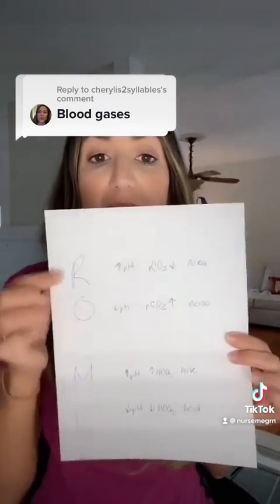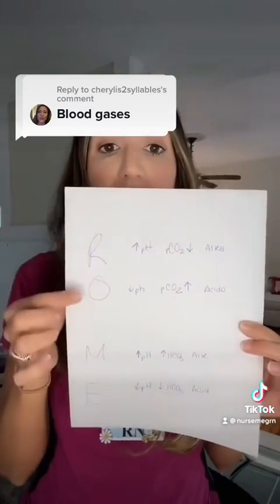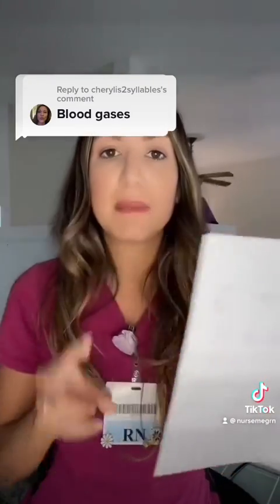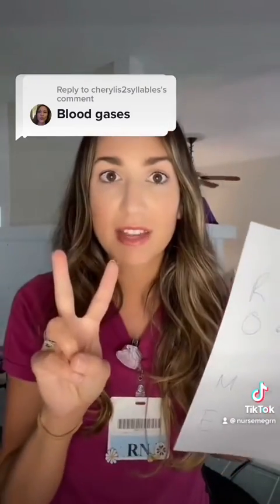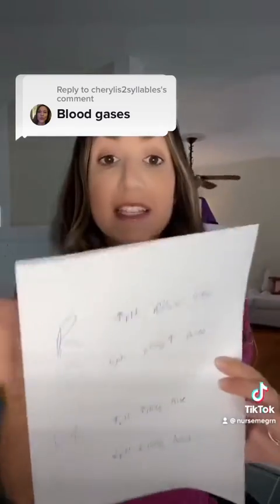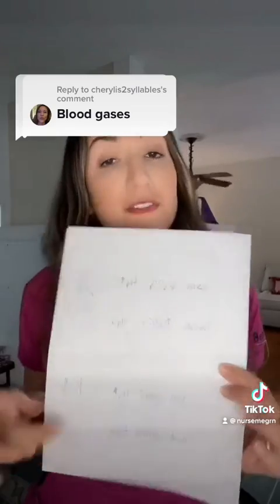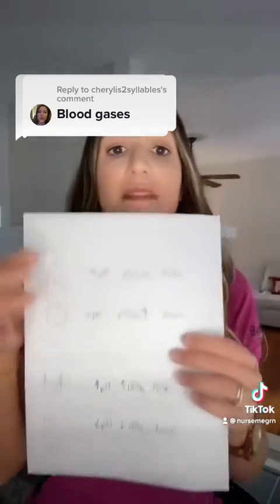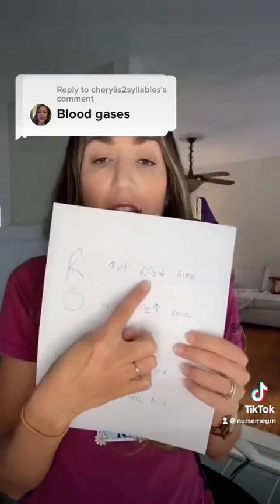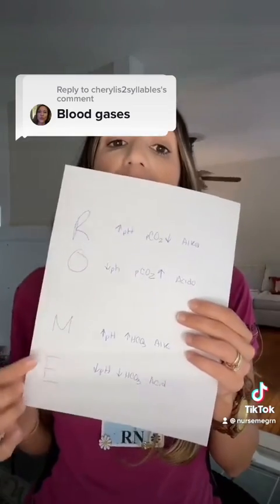The best way to do it is to learn ROME. Respiratory is Opposite, Metabolic is Equal. That means the value you're looking at and the pH are going to be either opposite if it's respiratory, or equal if it's metabolic. If it's respiratory, we're looking at CO2 — carbon dioxide. If it's metabolic, we're looking at the bicarb, which is HCO3.